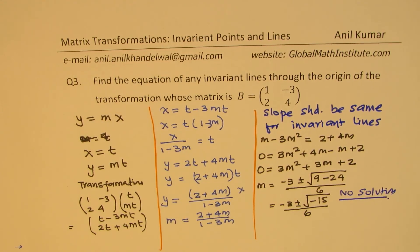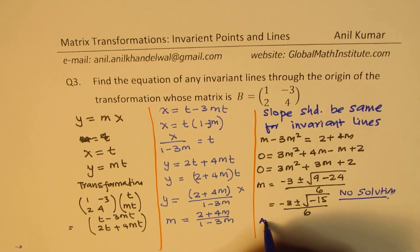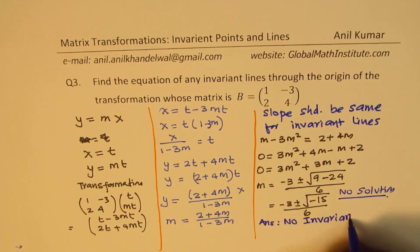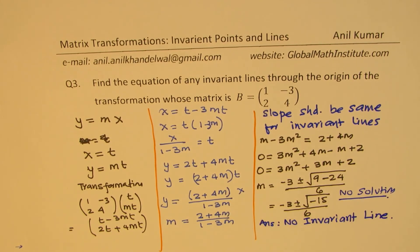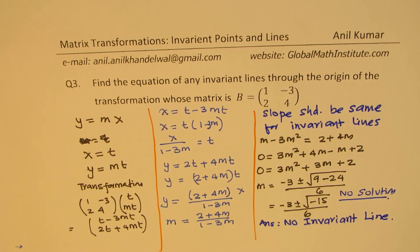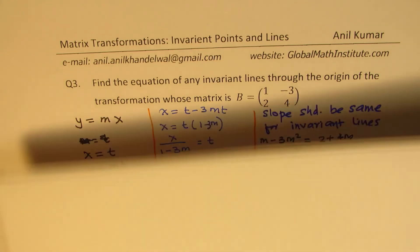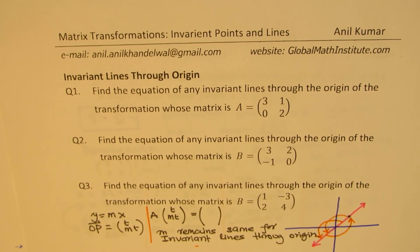So in this particular case, for the given transformation, we do not have any invariant line. Since the value of M is not real — there is no real solution — there is no invariant line for this transformation. What you saw here is that there are different conditions: sometimes you may get one or two solutions, and sometimes you do not get any solution. This helps you understand how to find equations of invariant lines passing through the origin.